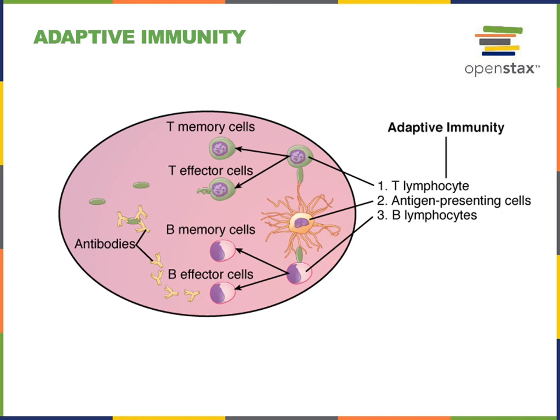The cell-mediated immunity involves T-lymphocytes. When a T-lymphocyte receptor binds an antigen, the T-lymphocyte becomes activated and divides, making more T-lymphocytes that produce the same receptor and can recognize the same antigen. Some of these daughter cells will be long-lived memory T-cells, while others will be effector cytotoxic T-cells that release cytotoxic granules to destroy our own cells that have become infected with a pathogen.